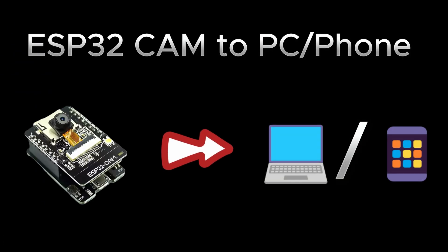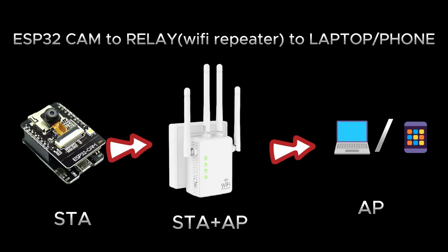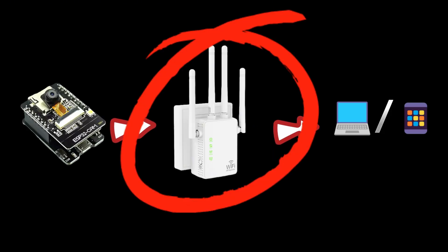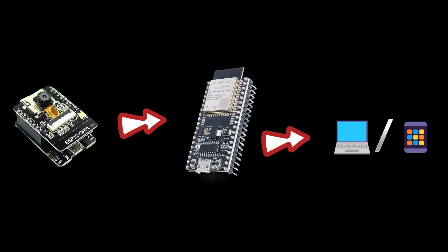There are two ways to make it. The first way is directly sending the video to the laptop or your phone — this will be the shortest range but will have the highest frame rate. If you want more range, the second method is by using a relay module in between the ESP32-CAM and the laptop or phone. It's recommended to use it on a laptop; the FPS and delay will greatly depend on the relay.